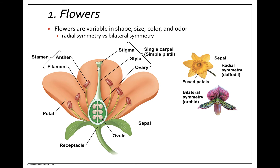Flowers are unique to angiosperms and are structures for sexual reproduction. Typically, these flowers are going to attract some kind of pollinator, maybe an insect or a bird, who's going to come in contact with pollen and then transfer it to another flower. They are made up of specialized shoots — specialized leaves that have different structures. Starting from the outside working in, we have the sepal. These are green coverings that cover the flower as a bud before it blooms to help protect it.